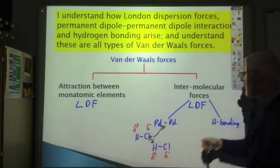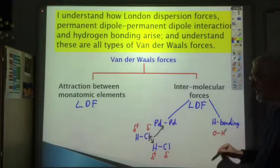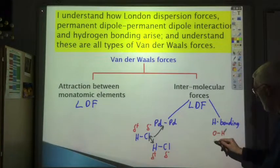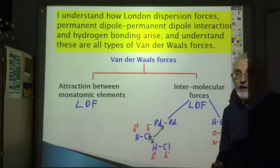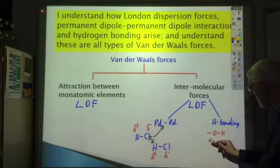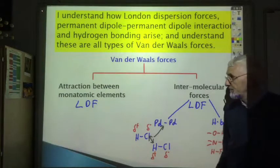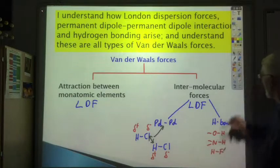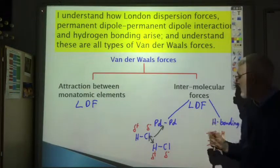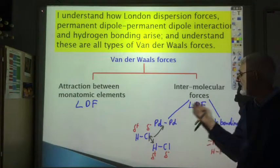Hydrogen bonding is very similar to PDPD but a lot stronger, and you only get it if the molecule contains an OH bond — for example in water or in alcohols — or an NH bond, which you get in ammonia or in proteins, where it's very important for determining the shape of proteins, or in HF (hydrogen fluoride). So if your molecule is nonpolar, LDF is the major intermolecular force; if it's polar, it will have LDF and either PDPD or hydrogen bonding.